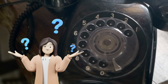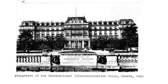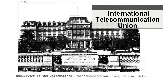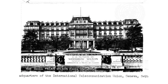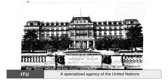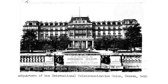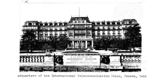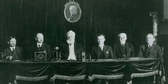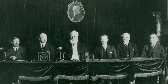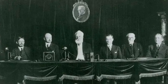Without it, telephone networks couldn't know where to send a call automatically. That's where the International Telecommunication Union, or ITU, stepped in. The ITU, a specialized agency of the United Nations, was already managing global telegraph and radio standards. Now it turned its attention to the telephone network, determined to make the world's calls speak the same numerical language.